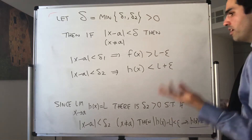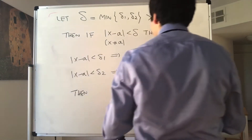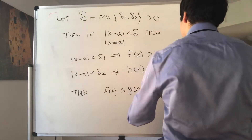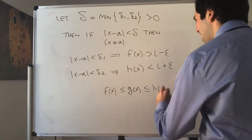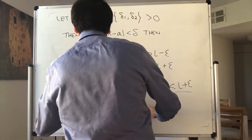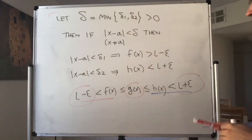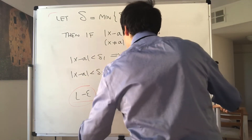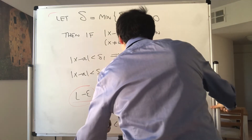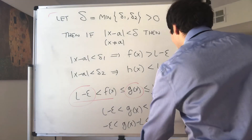But then what can we say about g? Because remember we want to show that g goes to l. Look: g of x is squeezed between f of x and h of x. And that's where the inequalities go the right way — h of x is less than l plus epsilon, and f of x is greater than l minus epsilon. So g of x is actually squeezed between l minus epsilon and l plus epsilon. In other words, g of x minus l is between negative epsilon and epsilon, and if a number is between negative epsilon and epsilon, then its absolute value is less than epsilon.